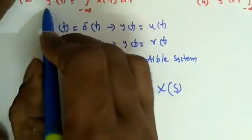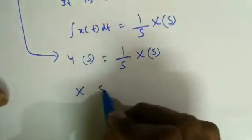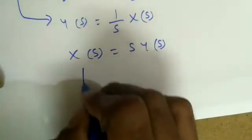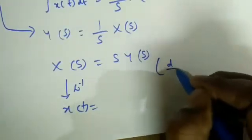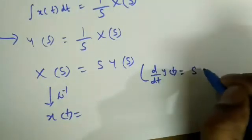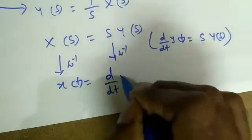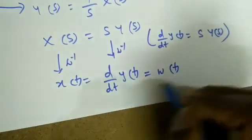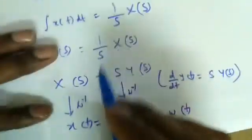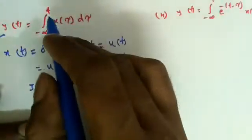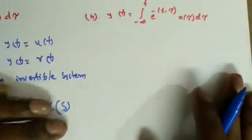So Y(s) = (1/s)·X(s), which gives X(s) = s·Y(s). Taking the inverse Laplace transform, multiplying by s in the Laplace domain corresponds to differentiation in the time domain. So x(t) = d/dt[y(t)]. This is the inverse system: w(t) = d/dt[y(t)]. We can verify: if y(t) = ∫x(τ)dτ and x(t) = d/dt[y(t)], then differentiation and integration cancel, recovering x(t).